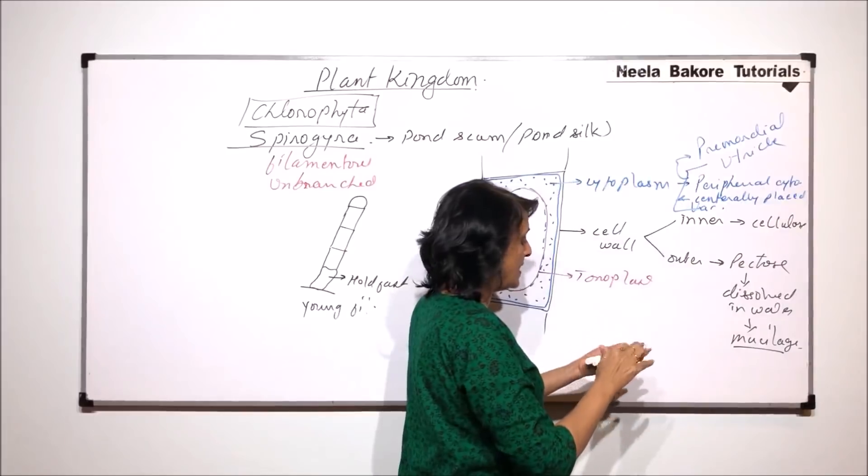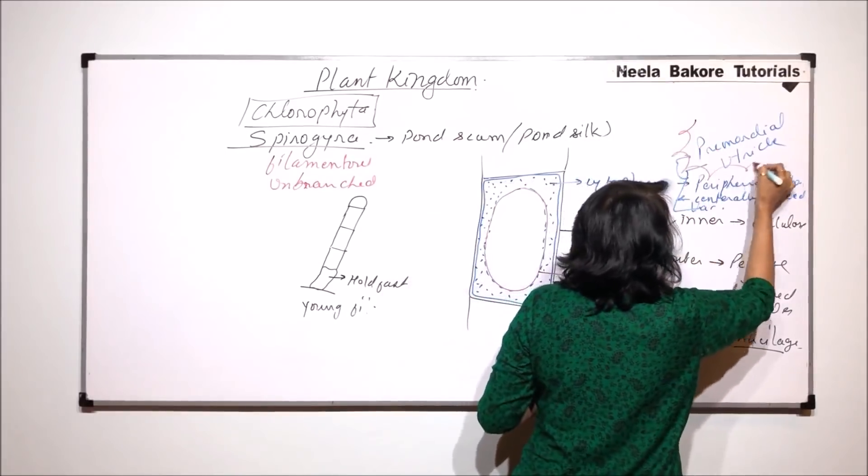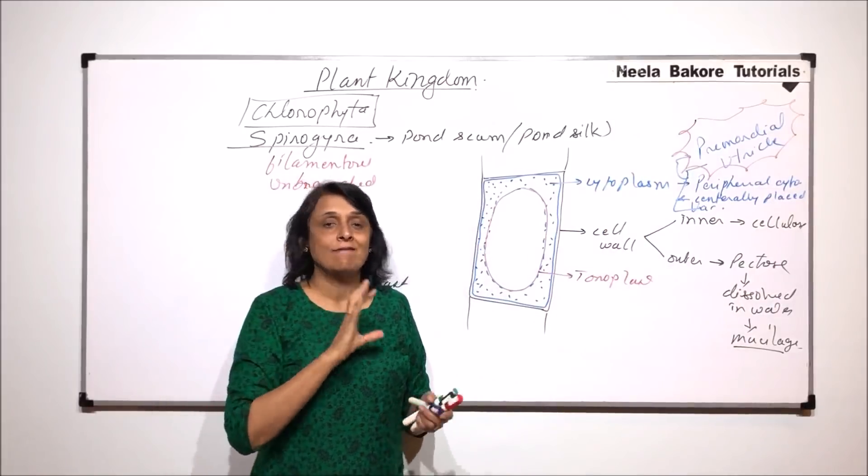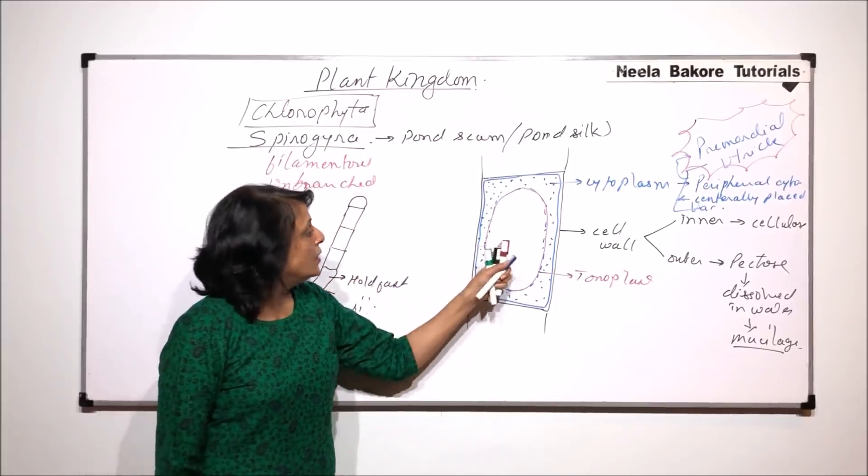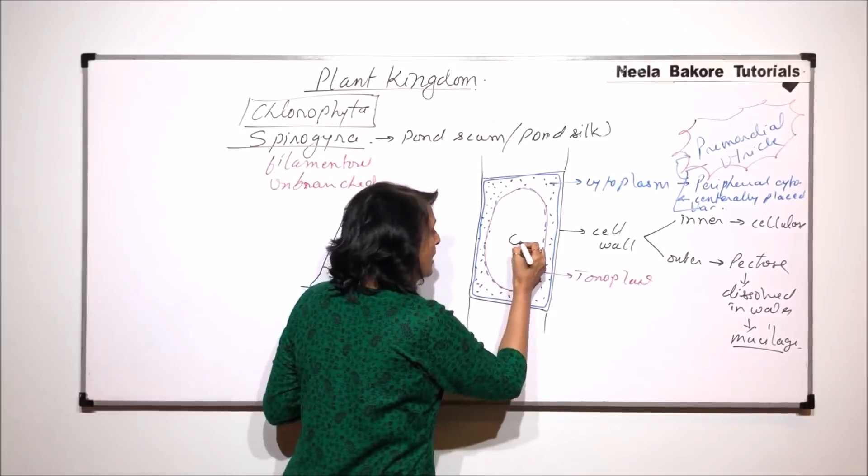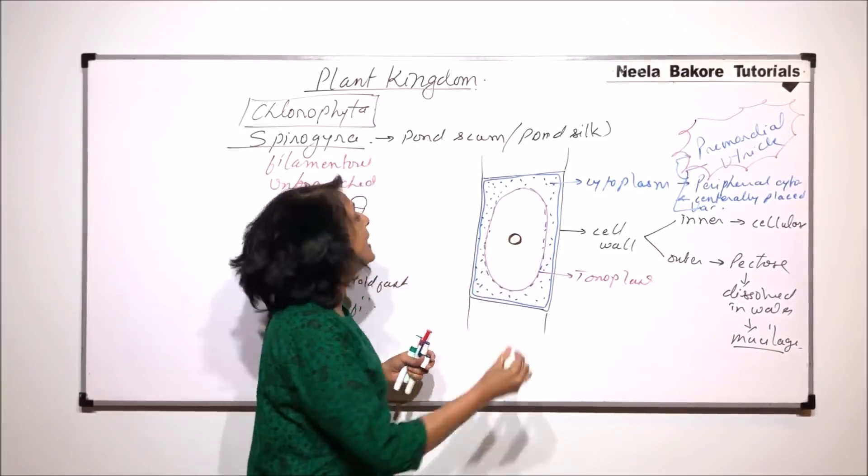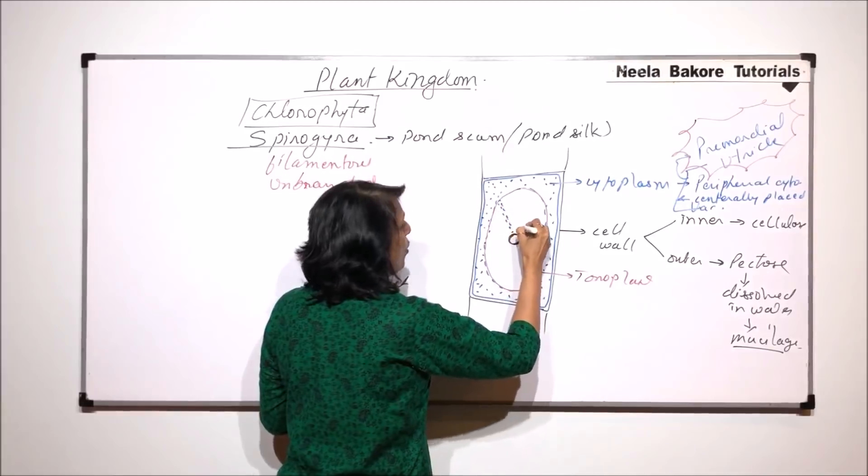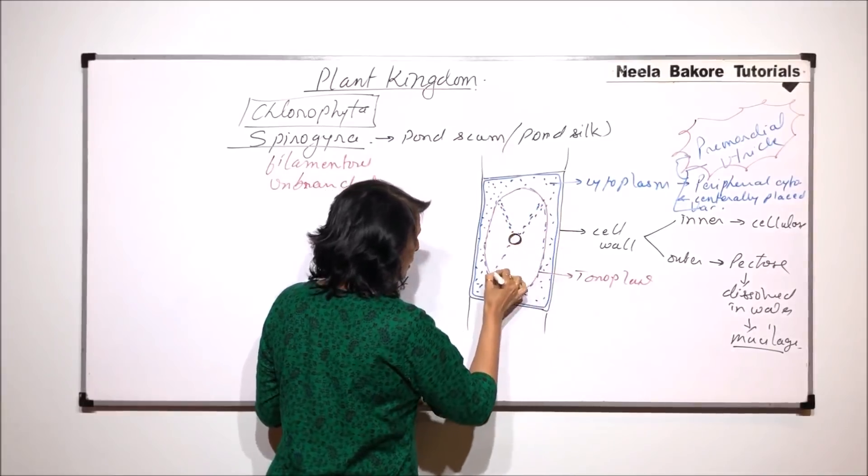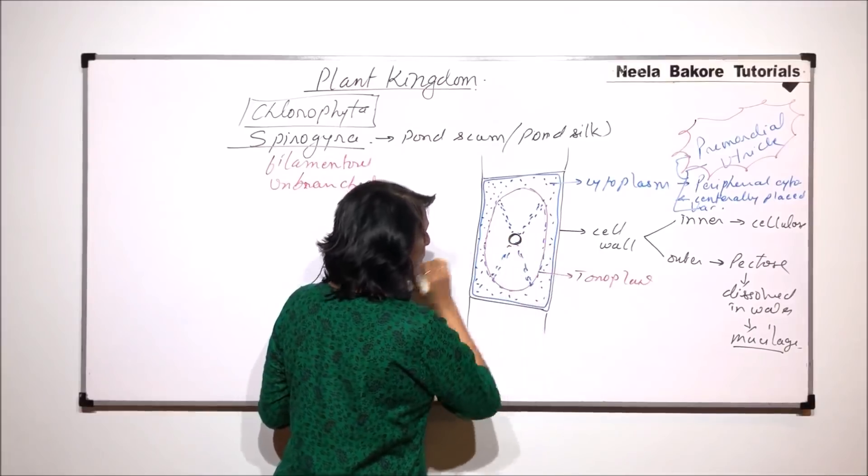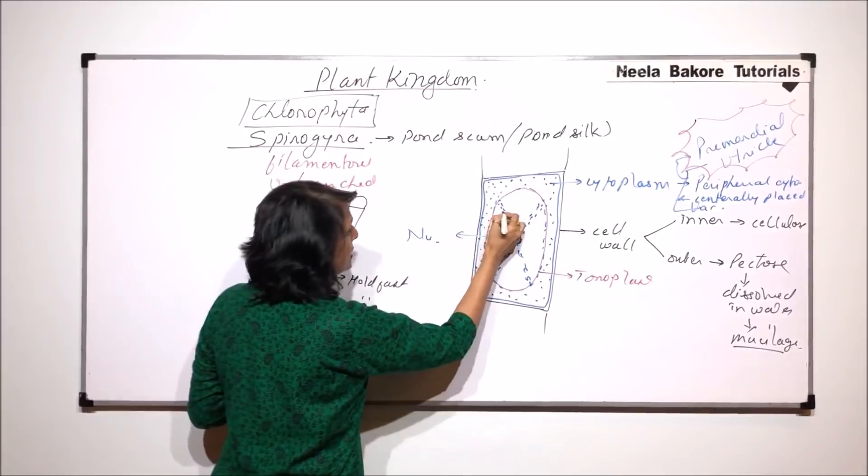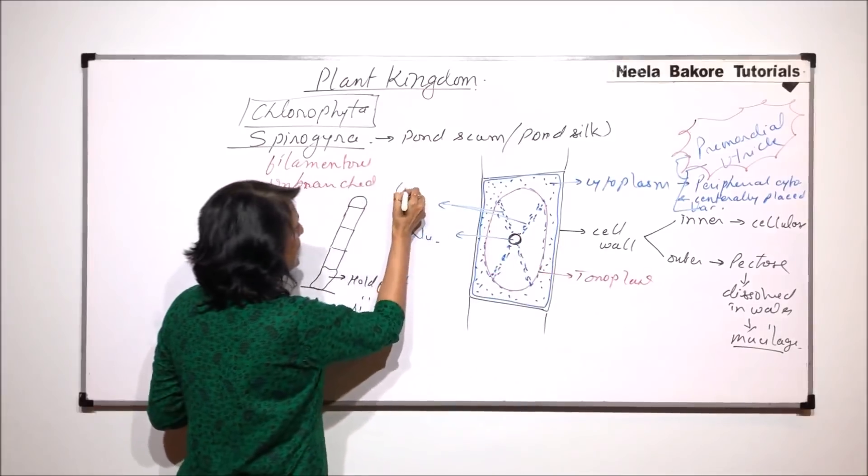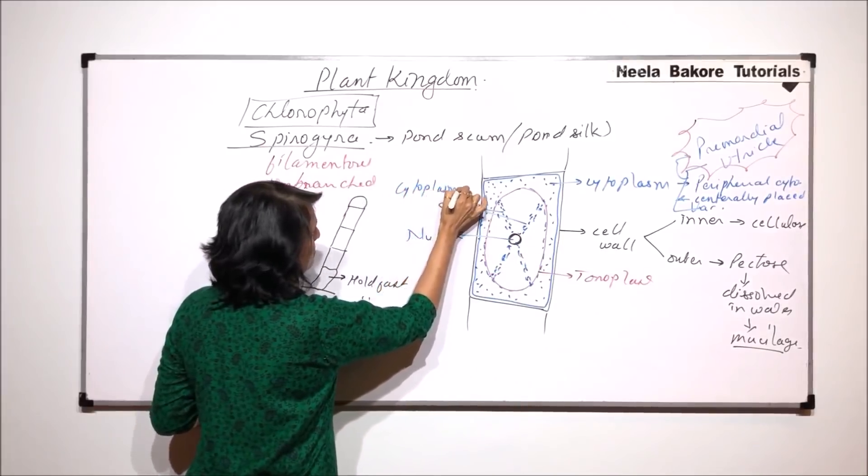This is a very important thing. Primordial utricle is nothing but peripheral cytoplasm and centrally placed vacuole. Now, where is the nucleus? The nucleus is in the center of the vacuole and it is suspended by cytoplasmic strands. These are cytoplasmic strands which are going to hold this nucleus and it will remain suspended in the center of the vacuole.